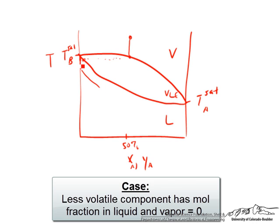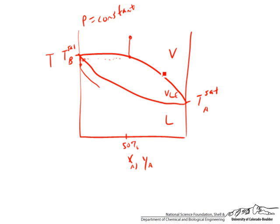But we know that this can't be right because this would suggest that at the same temperature, for a constant pressure, we can have the less volatile component in both the vapor and the liquid.